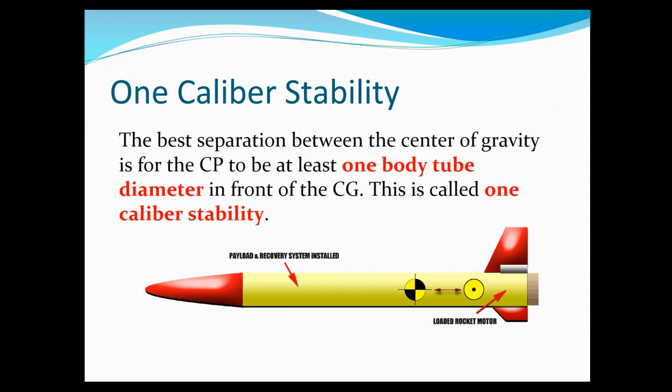There's a thing called one caliber stability. And that's pretty desirable. The way you calculate one caliber stability, or the way you achieve one caliber stability is to have the distance between the center of gravity and the center of pressure. You want this distance to be equal to the diameter of the tube or the rocket. So in your design, you might want to start with trying to calculate or trying to come up with your design to achieve that.